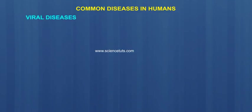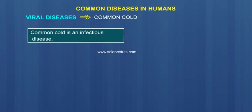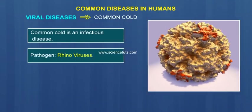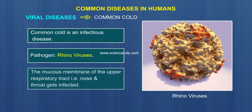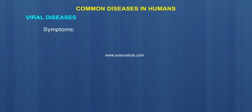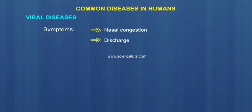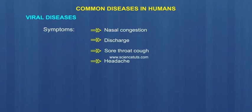Viral Diseases. Common cold is an infectious disease. Pathogen: Rhinoviruses. The mucous membrane of the upper respiratory tract, that is, nose and throat, gets infected. Symptoms include nasal congestion and discharge, sore throat, cough, headache, hoarseness, and tiredness, etc.